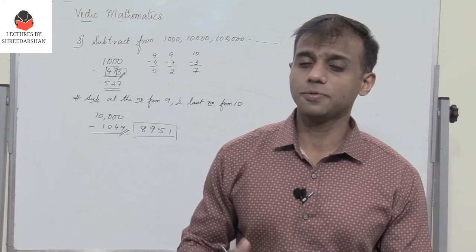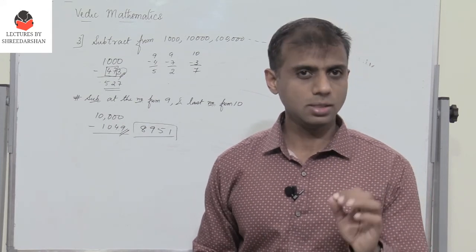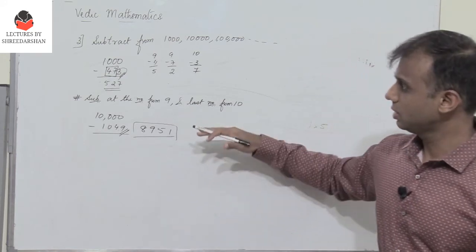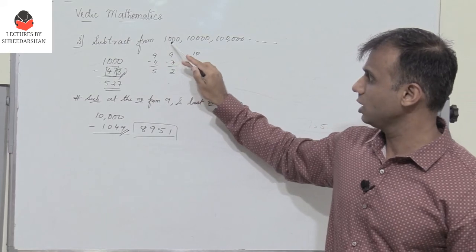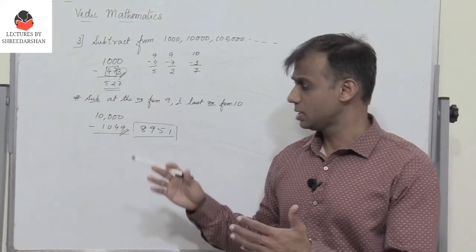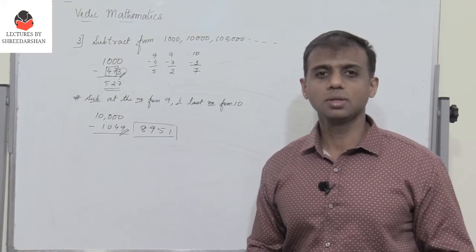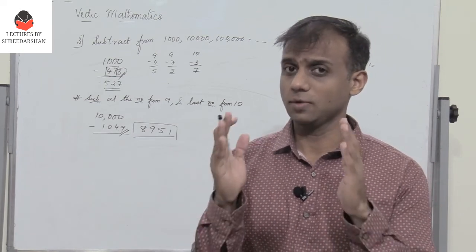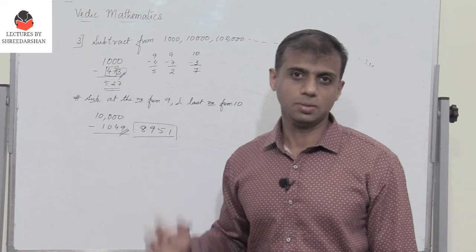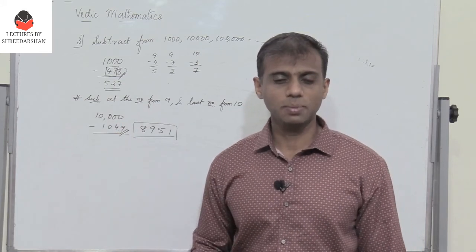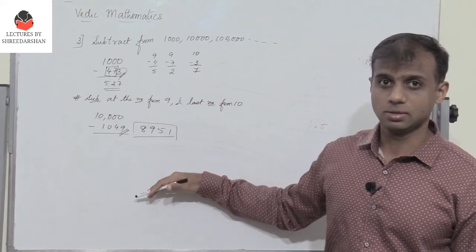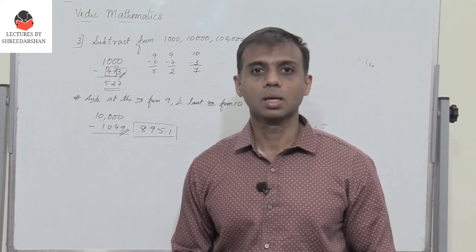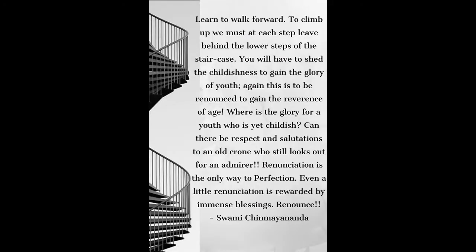In the first case we saw how to find the square of any number ending with 5. In the second case we saw how to multiply a number by 5. And in the third case we saw how to subtract any number from 1 followed by zeros. These techniques are simple, easy, and save a lot of time — especially in entrance exams or multiple choice tests where you have a time limit. Make sure you like, share, and subscribe, and watch out for the next video on more Vedic mathematics techniques. Don't forget to press the bell icon for notifications.